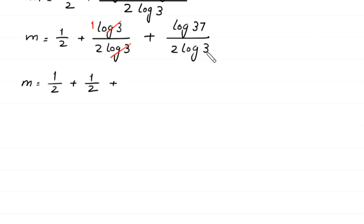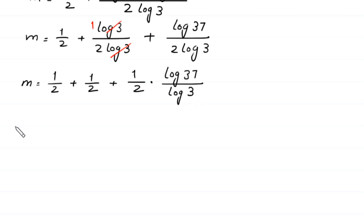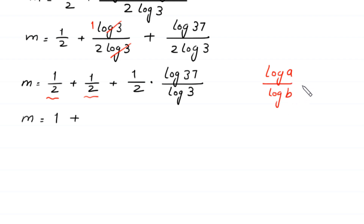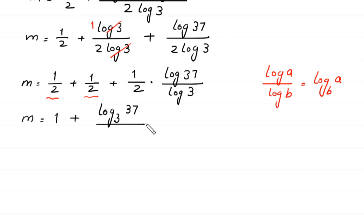Next, m is equal to 1 over 2 plus this log of 3 will be cancelled out with this log of 3, and here we are left with 1 over 2 plus log of 37 over 2 times log of 3. This 1 over 2 plus 1 over 2 becomes 1, plus log of 37 divided by log of 3, which equals log base 3 of 37.